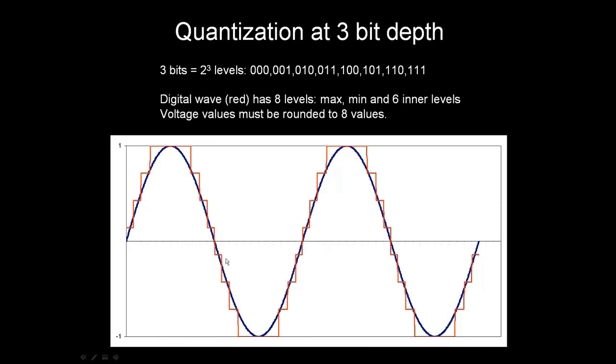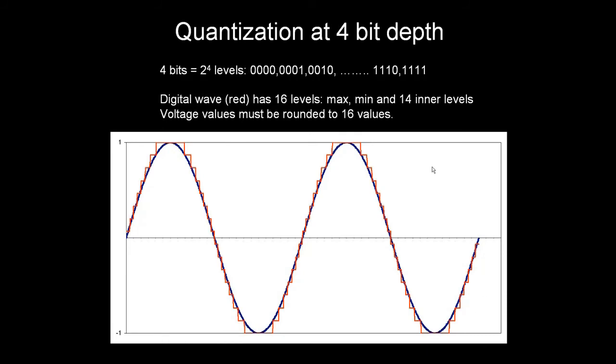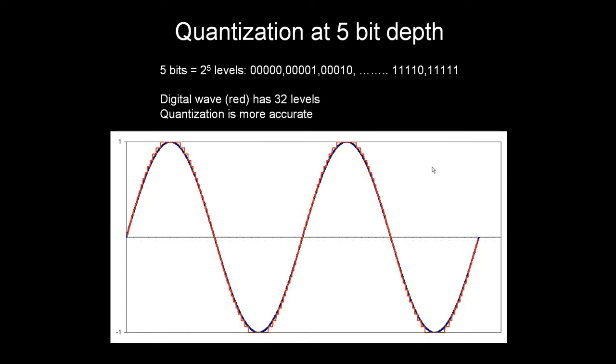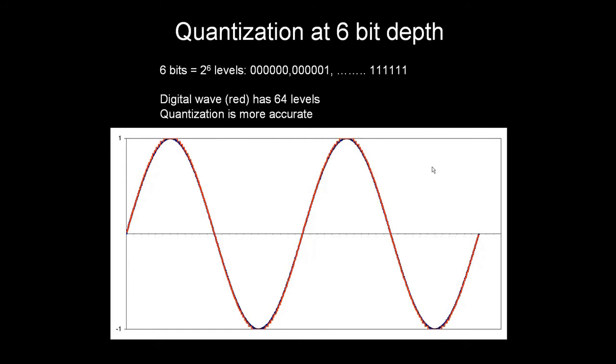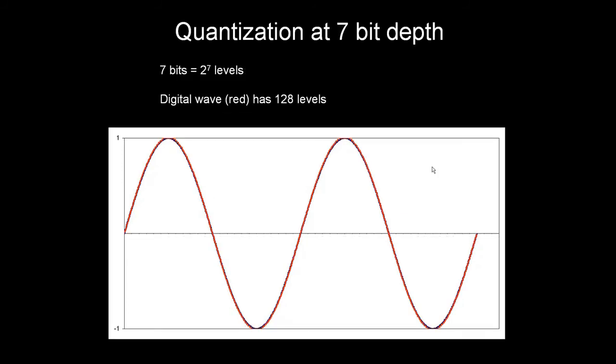With 4 bits, there are 16 levels. With 5 bits, there are 32 levels. You can see that the digital signal is more accurate.